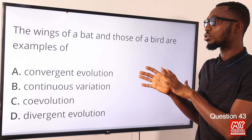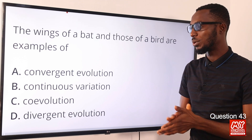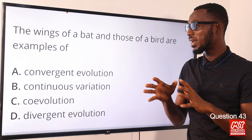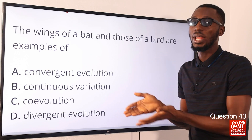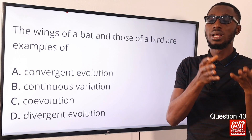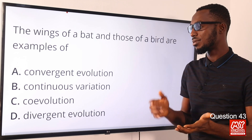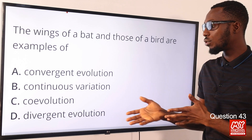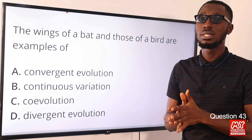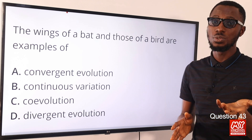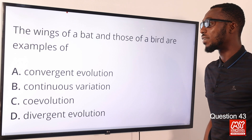Continuous variation refers to a kind of variation with two extreme forms — like height, either tall or short. Co-evolution is a kind of responsive change; for instance, changes seen in flowers produce corresponding changes in insect pollinators. Divergent evolution is when from a particular ancestor, different kinds of species evolve — for instance, Darwin's finches on the Galapagos Island. The correct option is option A for convergent evolution.